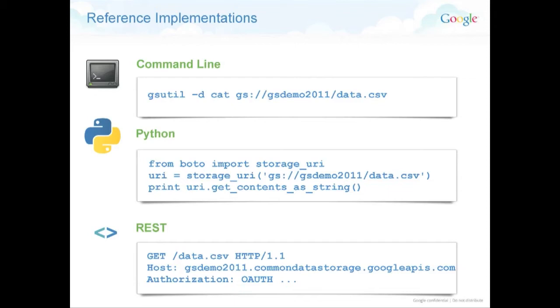You just take the library and then you pass the command. The URL is gs (Google Storage) colon slash slash, and then the REST way — we already had an example of that before.